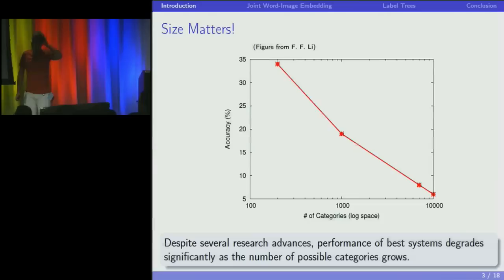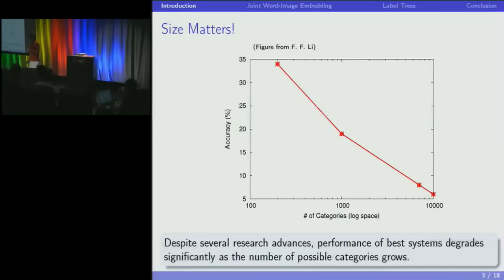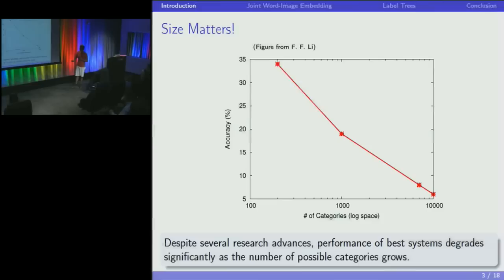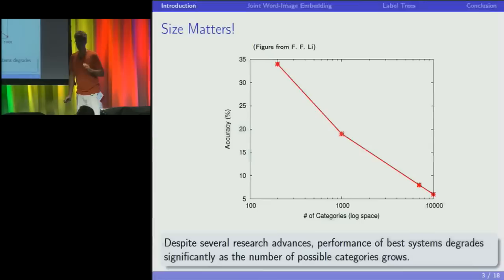Sometimes size matters. It gets harder to label images as the dictionary grows. With a few hundred labels, we'd be right about 35% of the time. With 1,000 labels — that competition — you get about 20% accuracy. With 10,000 labels, you're at about 6% accuracy. These numbers are really low, scary, but we'll see that it's not that bad.